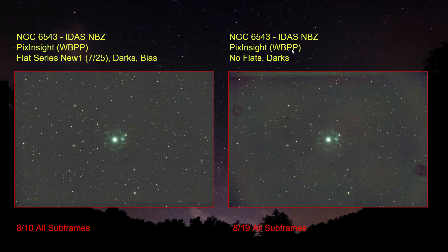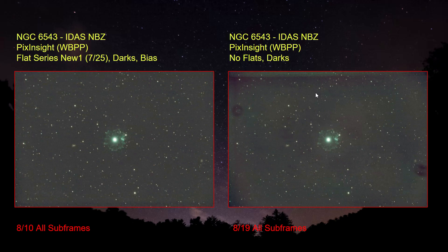Over here is that same data only without flats — just darks. I got rid of the amp glow and whatnot, and you can see there's still a little bit of that reddish whatever still in this image. So perhaps that is something on the sensor, but good flats should remove it. You can see the dust bunnies are here as well — there's one here and several others.